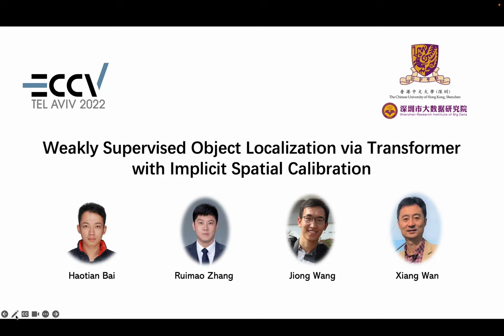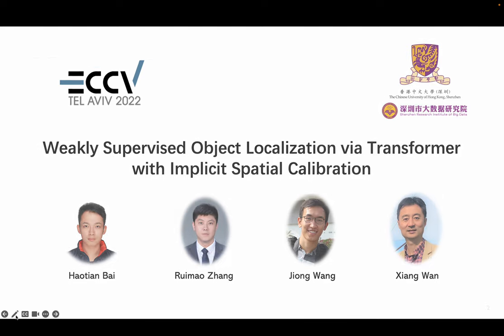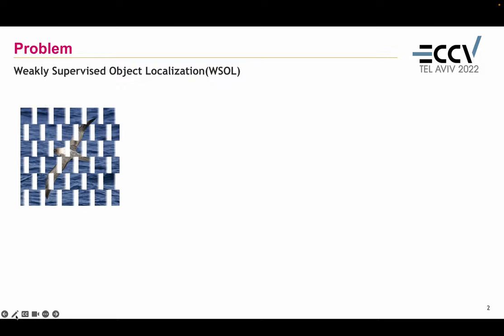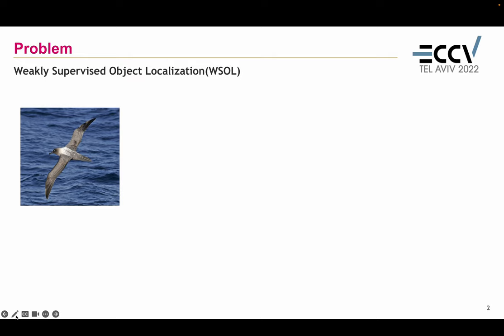I'm Houtian. Today we present our work: Weakly Supervised Object Localization for a Transformer with Implicit Spatial Calibration. Weakly Supervised Object Localization aims to learn to localize objects by using only image-level labels. For instance, given an image of a bird and its name, we are expected to estimate the bounding box to localize it.